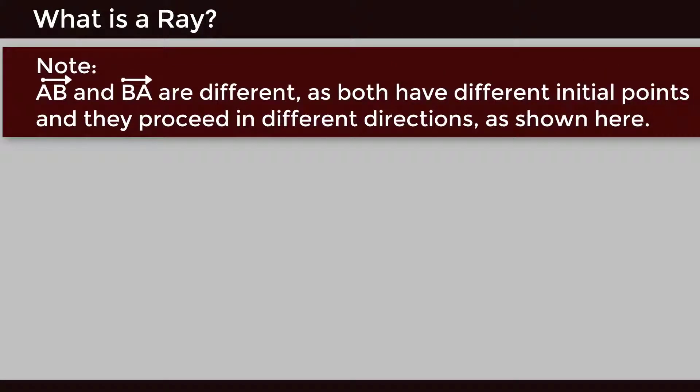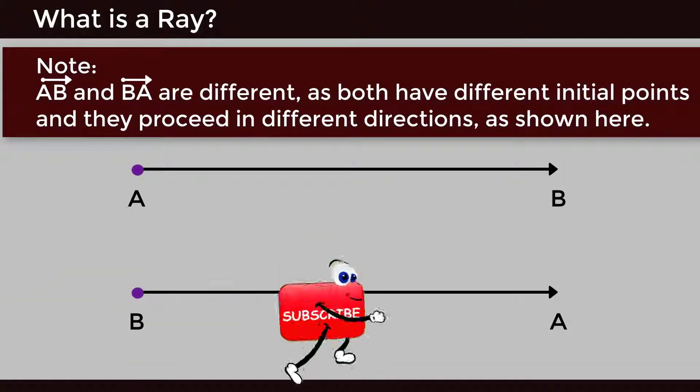Note: Ray AB and ray BA are different, as both have different initial points and they proceed in different directions, as shown here.